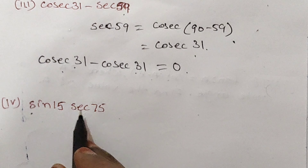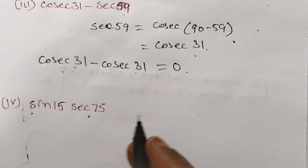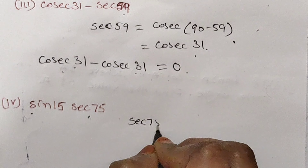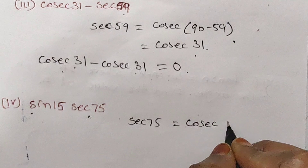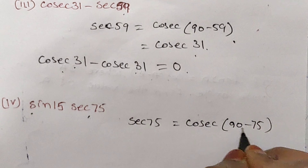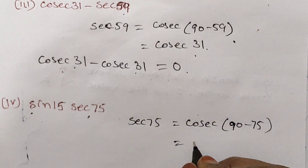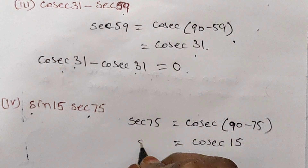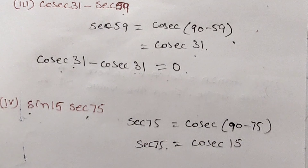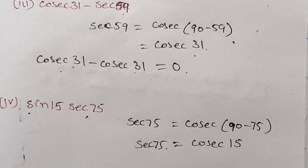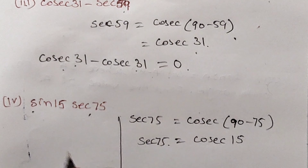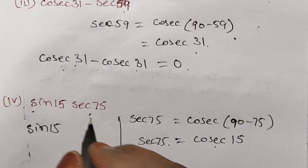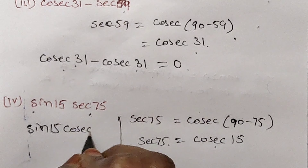Next: sin 15 into sec 75. Sec 75 can be written as cosec(90 minus 75). 90 minus 75 is 15, so sec 75 is equal to cosec 15. Therefore, sin 15 into sec 75 becomes sin 15 into cosec 15.